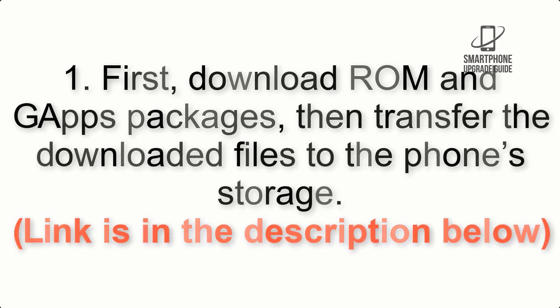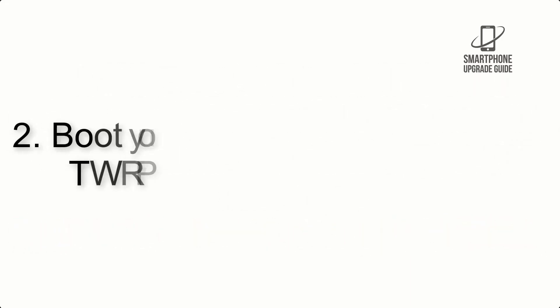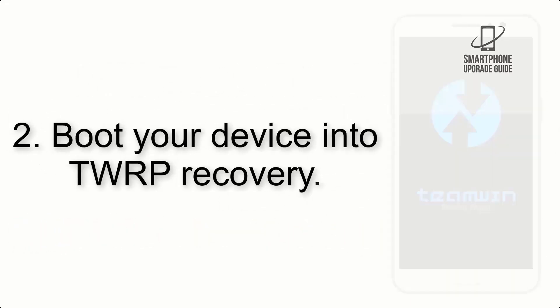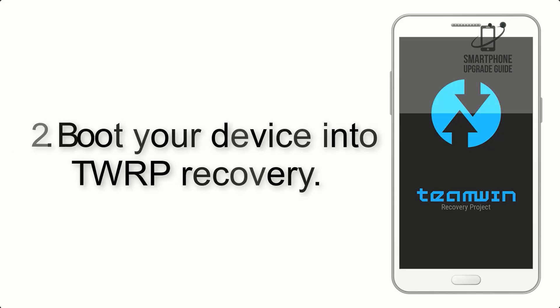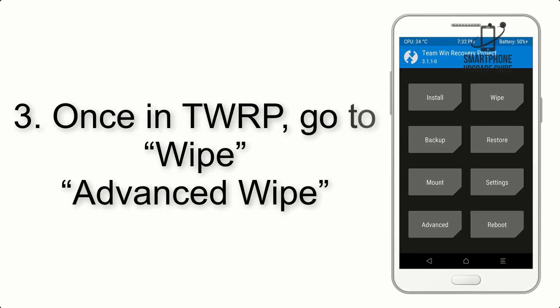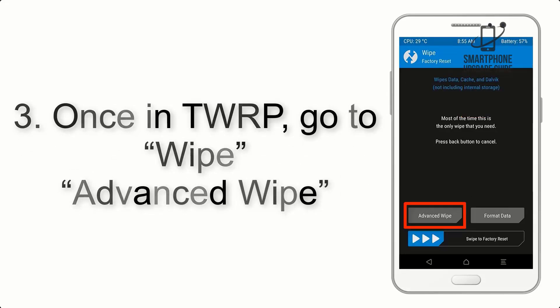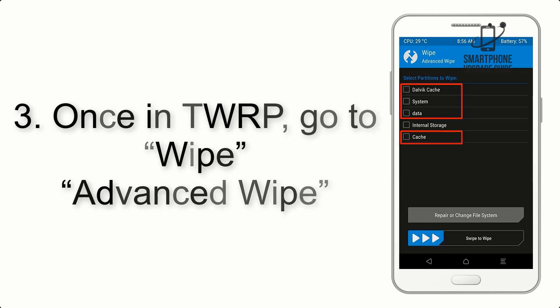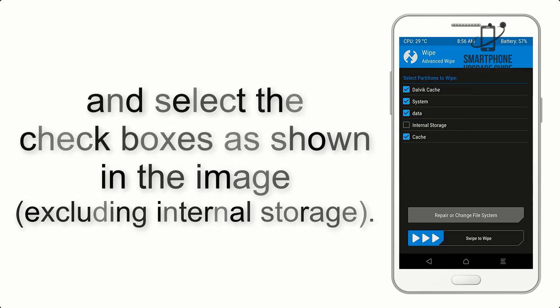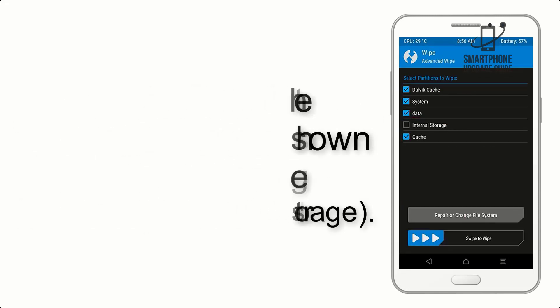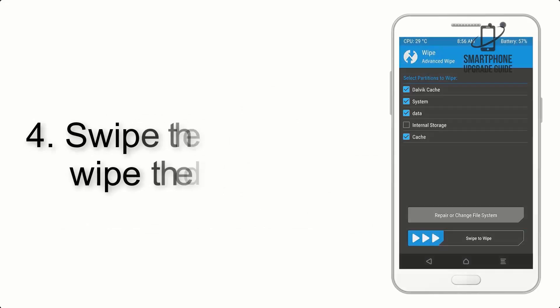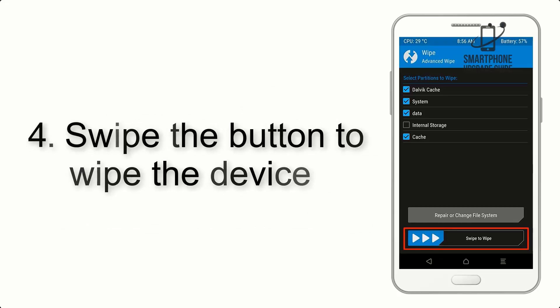Step 2: Boot your device into TWRP recovery. Once in TWRP, click on Advanced Wipe and select the checkboxes as shown in the image, excluding internal storage.